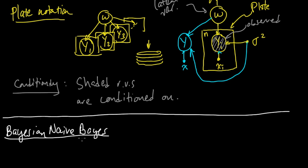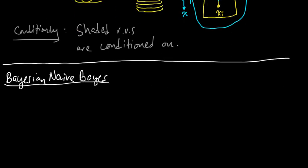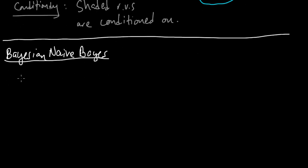So I'll give you the generative process description for Bayesian Naive Bayes. It's the classification setup. We've got our data x1, y1. It's again a supervised learning problem.